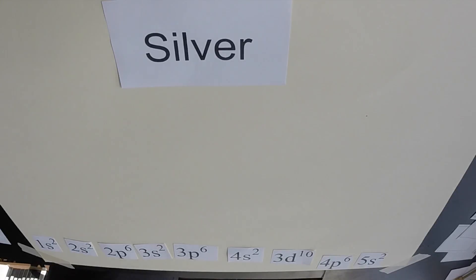All right, so let's run through another example, and we'll do the electron configuration, the noble gas shortcut, and then an orbital diagram. Let's look at silver.